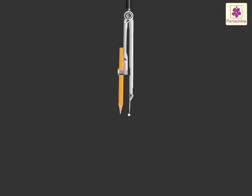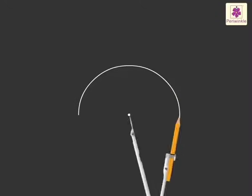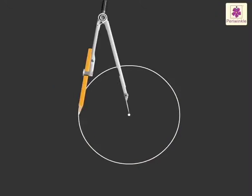Step 1: Keep the metal point of the compass firmly on a fixed point. Step 2: Stretch the arm of the compass that holds the pencil. Step 3: Move the pencil arm around, keeping the metal arm fixed.